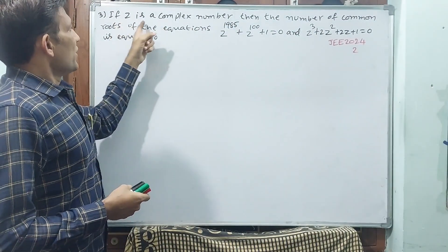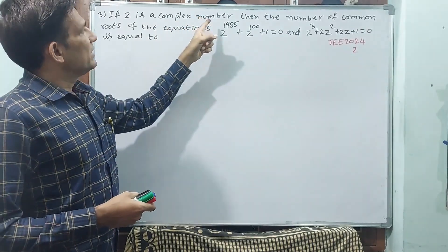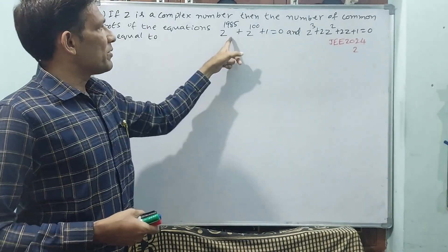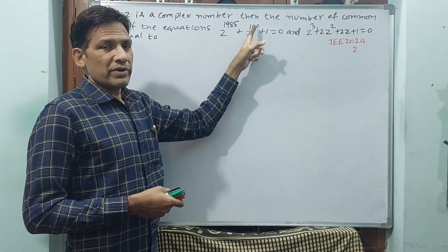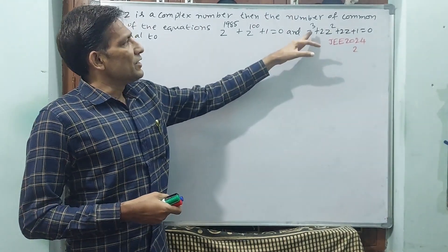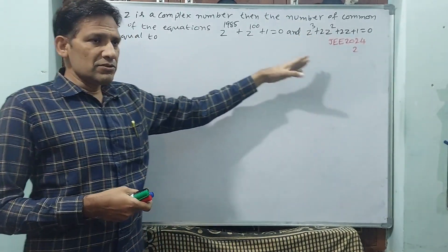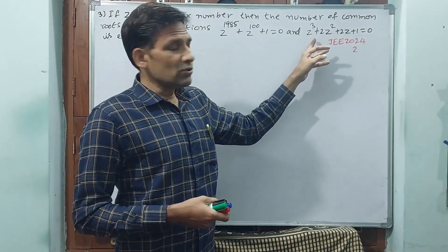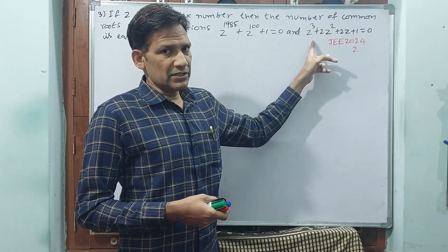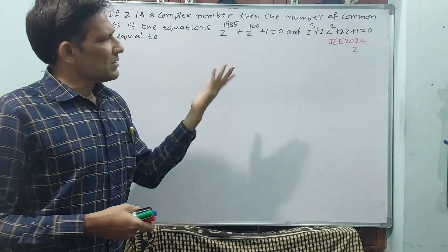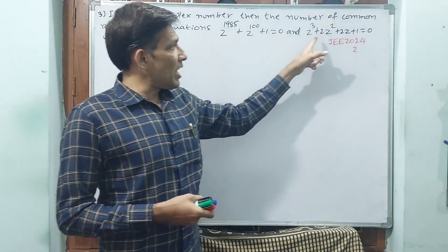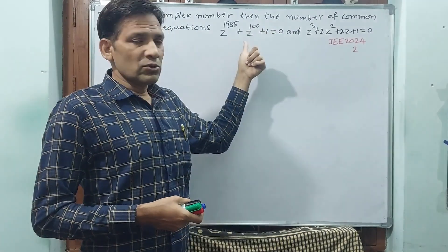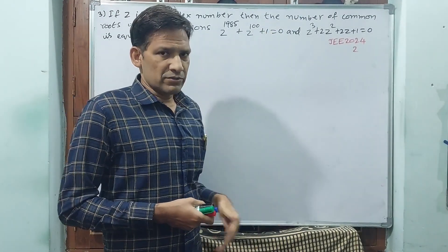Question number three: If Z is a complex number, then find the number of common roots of the two equations — Z to the power 1985 plus Z to the power 100 plus 1 equal to 0, and Z-cube plus 2Z-square plus 2Z plus 1 equal to 0. We don't know how many roots the first has, but the second is a cubic equation, so three roots will be there. Some may be common roots.